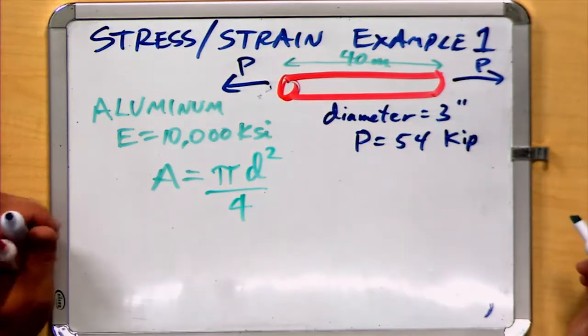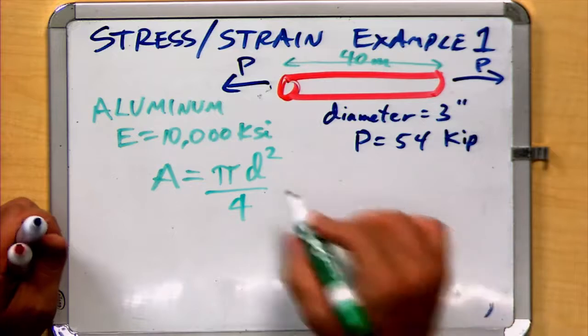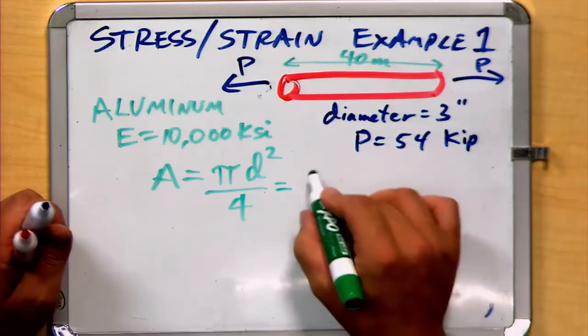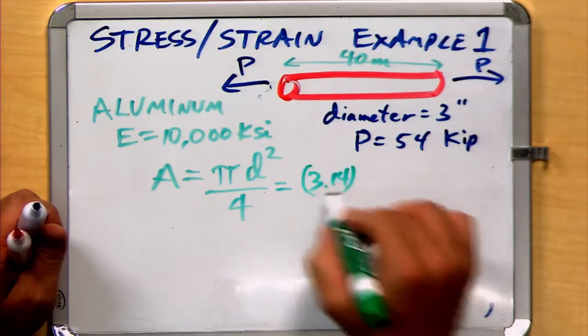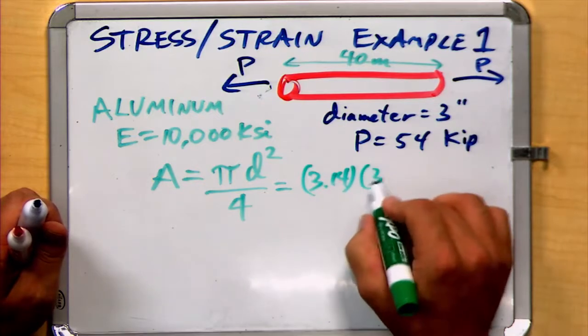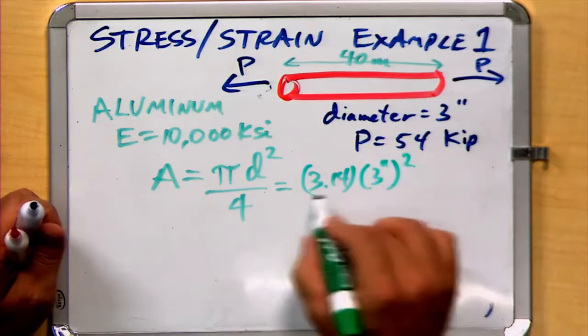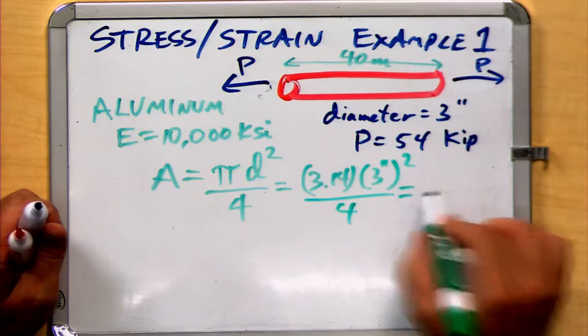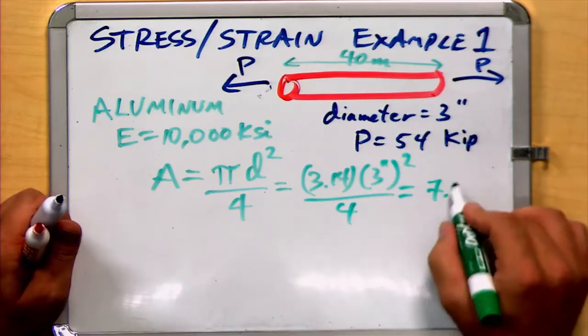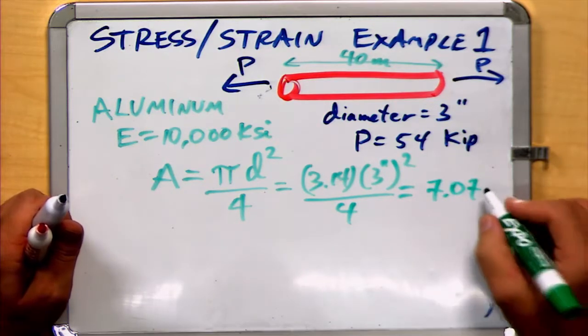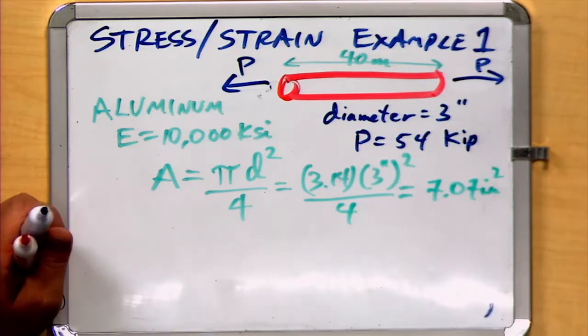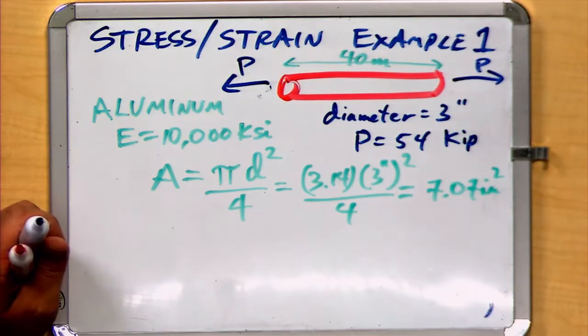And we calculate 3.14 times our 3 inch diameter squared divided by 4. And when we do so, we get 7.07 square inches for the cross-sectional area of the rod.